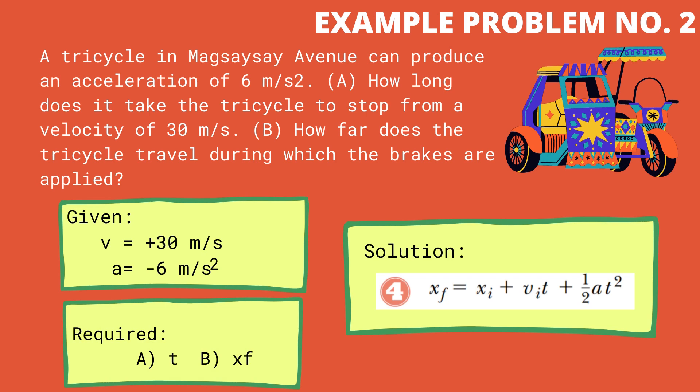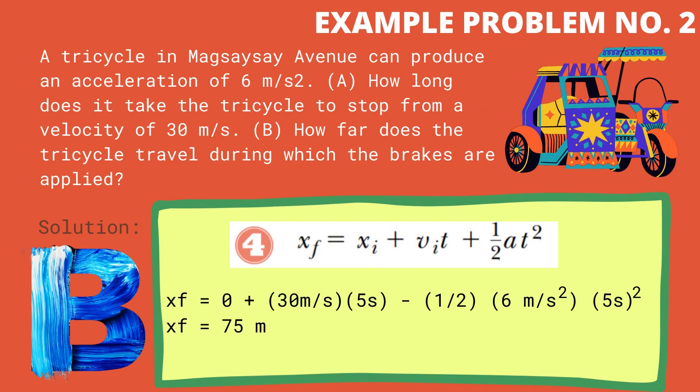For letter B, we will use kinematic equation number 4. We need to consider the sign of the velocity and the acceleration. Using kinematic equation number 4, we are able to get the value of x sub f — that is the distance traveled during which the brakes are applied — which is equal to 75 meters.